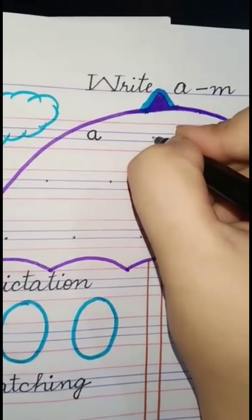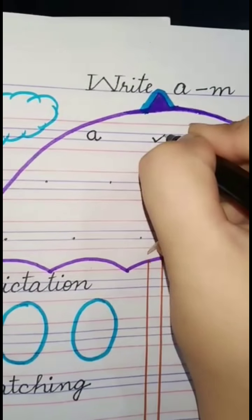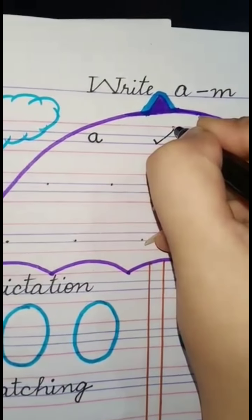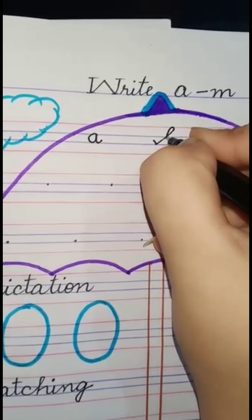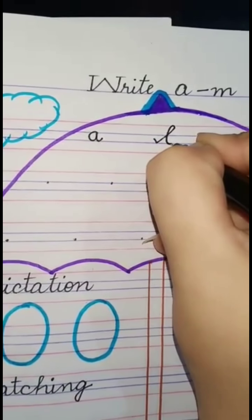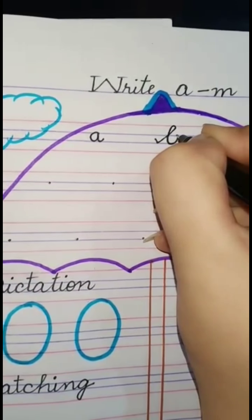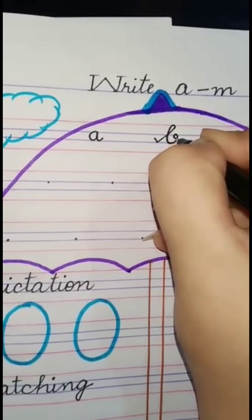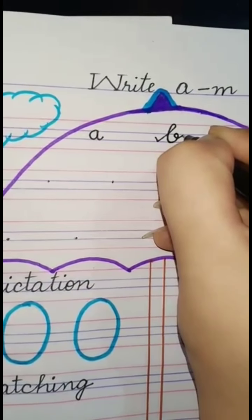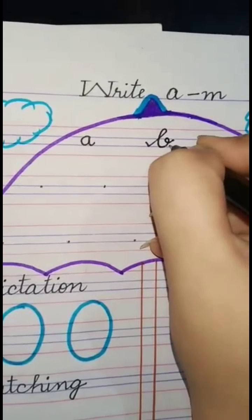Second word is ba. We write ba on the first three lines. Firstly make a tick, curve down, cut it on the second line, then make an ai. Ba - Bag.